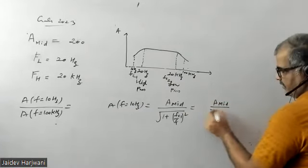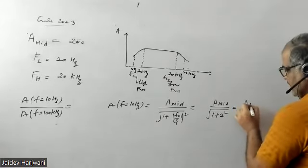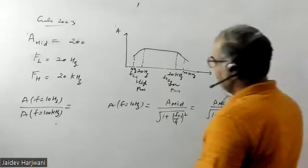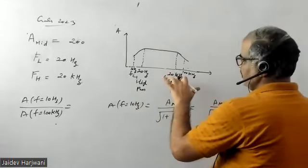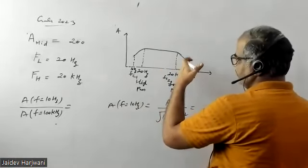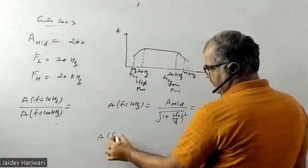Similarly, this is your low pass filter. If you want to calculate the gain at 100 kilohertz, gain at 100 kilohertz will be close to A_mid.